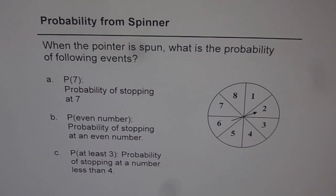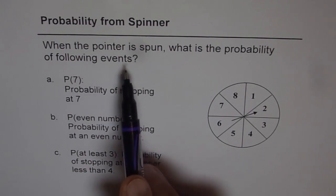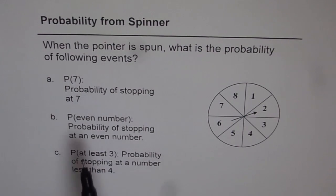Now let's try to understand how to find probability from a spinner. When the pointer is spun, what is the probability of the following events?